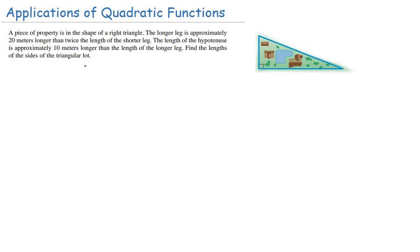Let's try another example. A piece of property is in the shape of a right triangle. The longer leg is approximately 20 meters longer than twice the length of the shorter leg. The length of the hypotenuse is approximately 10 meters longer than the length of the longer leg. Notice the longer leg is described in terms of the shorter leg, and the hypotenuse is in terms of the longer leg — so everything goes back to the shorter leg, which we don't know. We'll call that x.